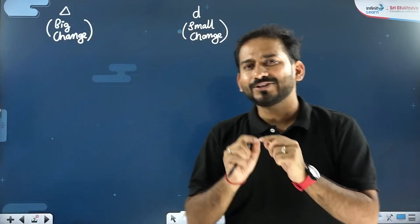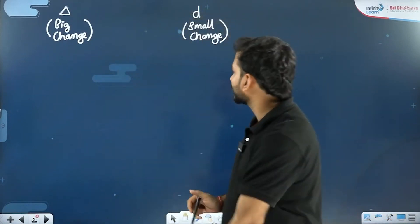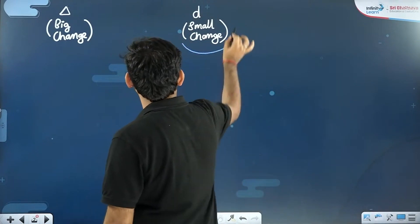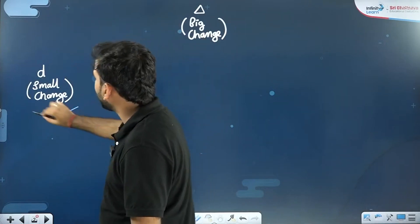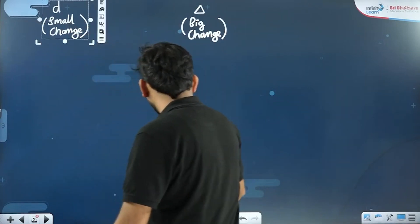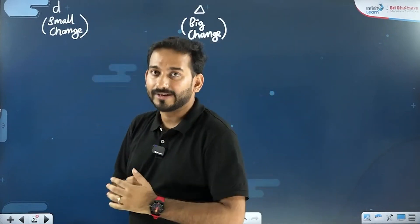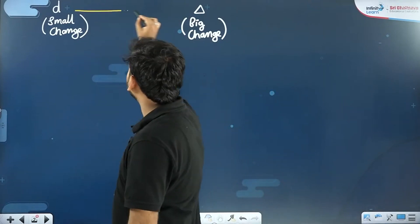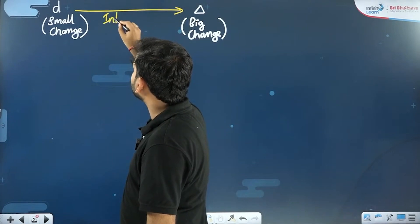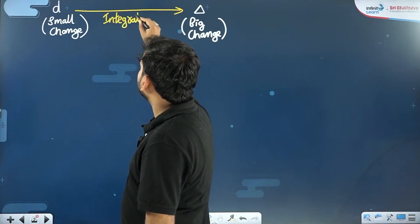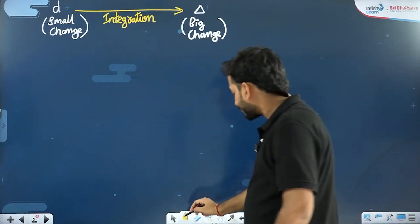But if you want to add all the small small changes in order to get a big change, you will use the process of integration. So in differentiation we start with a small change, and now we want to convert small changes into a big change. We will be using the process of integration.